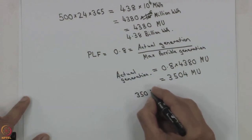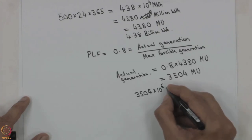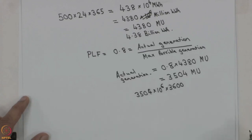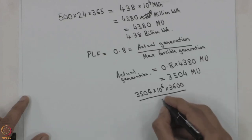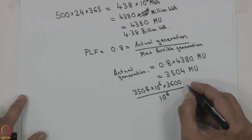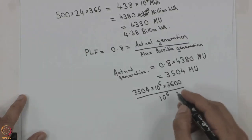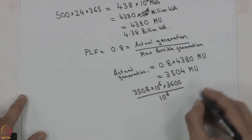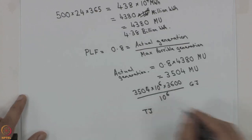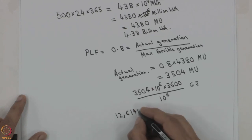If we want to convert this into gigajoules: 3504 into 10 to the power 6 kilowatt hours, and one kilowatt hour is 3600 kilojoules. Dividing by 10 to the power 9 to get gigajoules, and further expressing in terajoules by dividing by another 10 to the power 6, we get 126,144 terajoules.